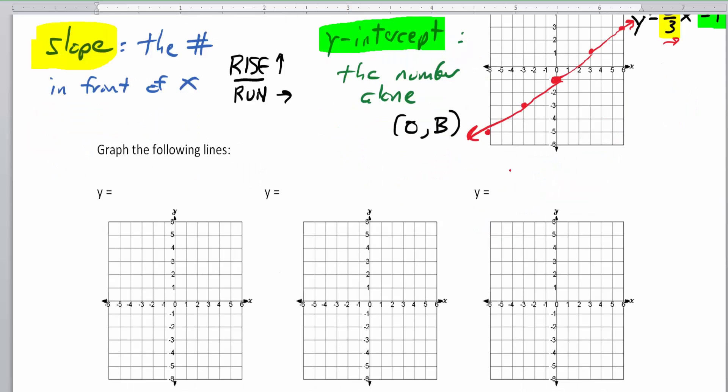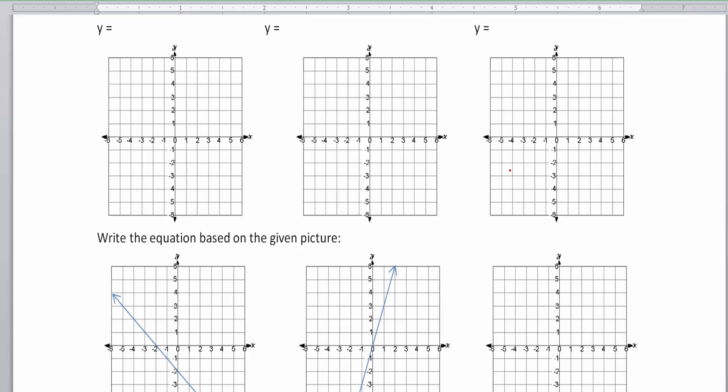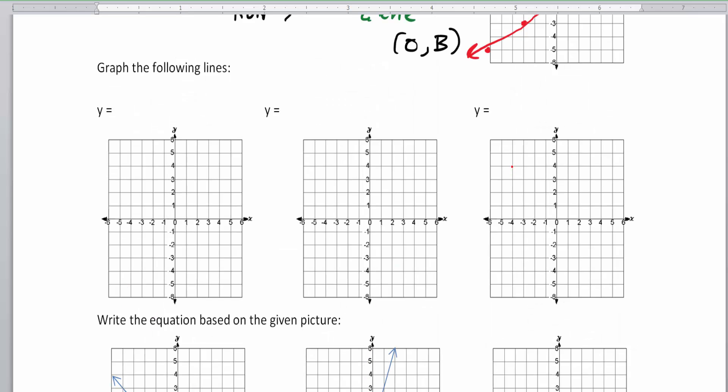So let's graph the following lines. The lines I want you to graph are y equals negative 5/2 x plus 6, y equals 4x, and y equals 2.